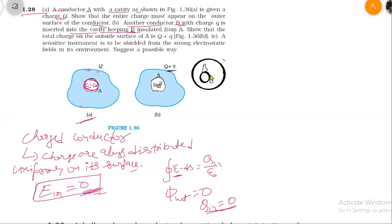This positive Q charge will induce negative Q charge on the inner cavity surface. Since negative charge is induced on the inner surface, an equal amount of positive charge Q will appear on the outer surface. The net charge on the outer surface will be Q plus Q. This was a conceptual question.